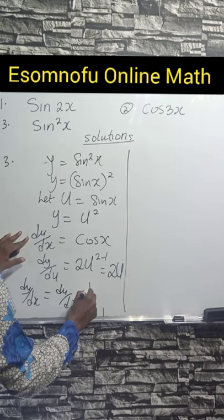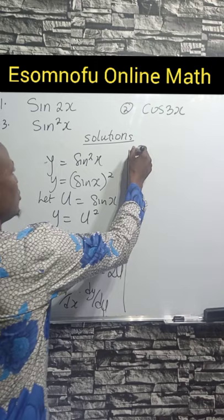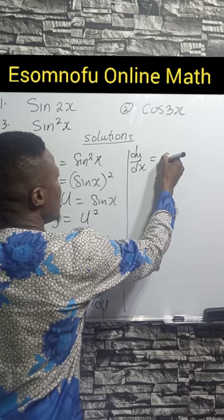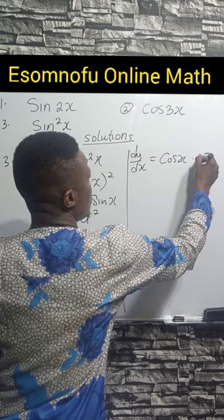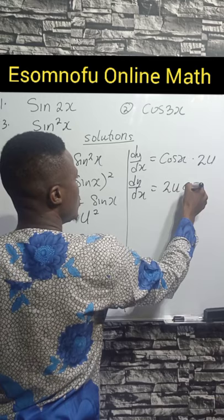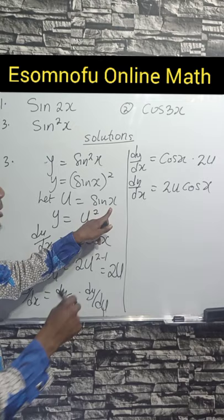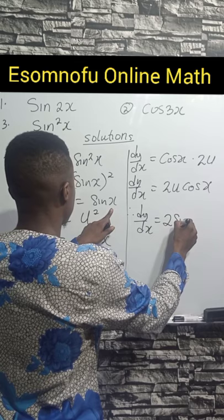Multiplying: dy/dx equals cos(x) times 2u, giving dy/dx equals 2u·cos(x). But originally u equals sin(x), so replace u. Therefore dy/dx equals 2sin(x)cos(x), and that is the answer, since u is sin(x) and we substitute it back.